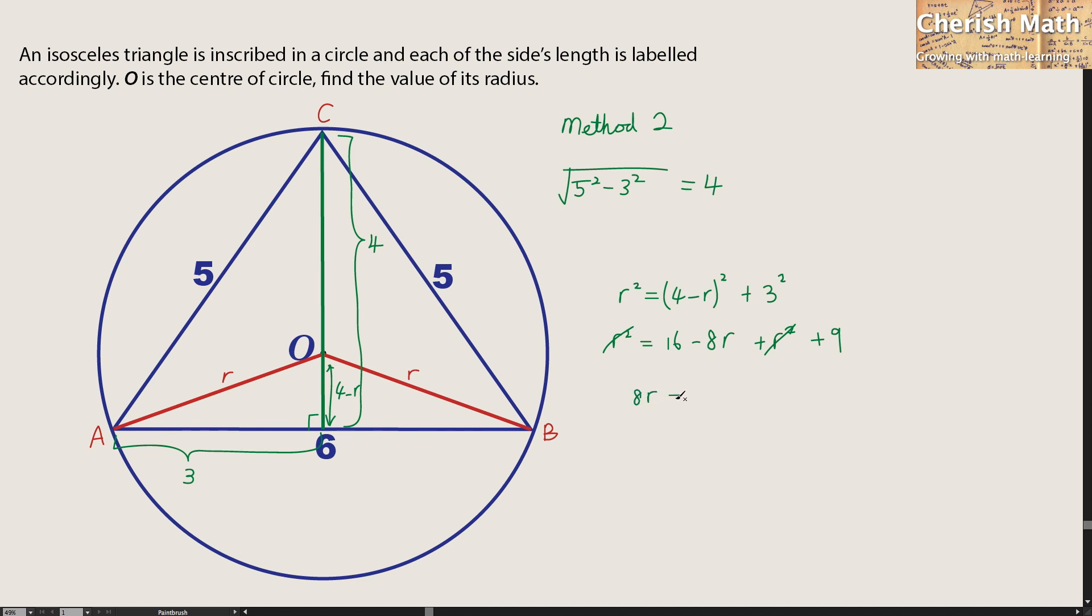8R is equal 25. So the value of R here is in fact, I think I got it, 3.125 units. And we solved the puzzle. Thanks for watching, and please subscribe.